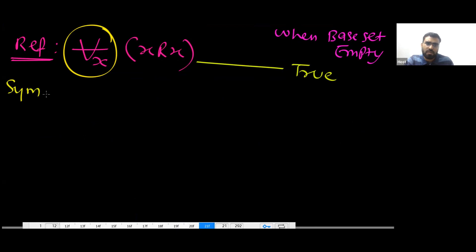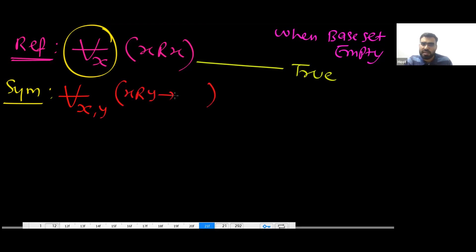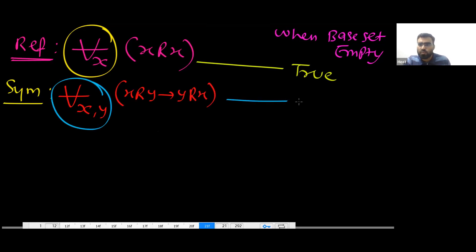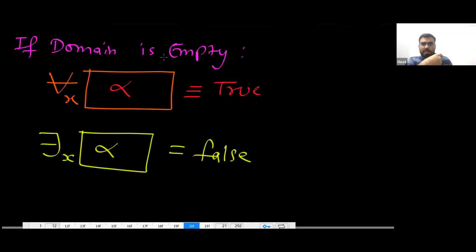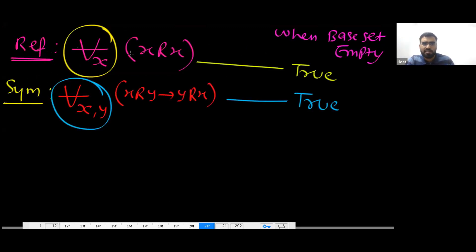What is the definition of symmetric? The definition of symmetric is: for all X, Y — something inside. Again, this is a universally quantified statement. So when your base set is empty, then this will also become true — because a universally quantified statement is true when the domain is empty.